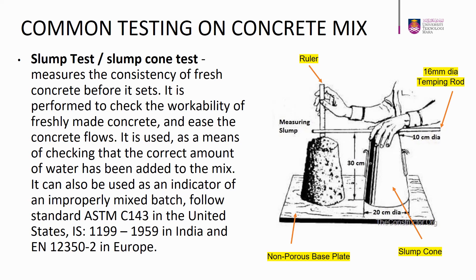There are two common tests on concrete mix. First, the slump test or slump cone test. The slump test measures the consistency of fresh concrete before it sets. It is performed to check the workability of freshly made concrete and the ease with which concrete flows. It is used, indirectly, as a means of checking that the correct amount of water has been added to the mix, and can also be used as an indicator of an improperly mixed batch. The standard codes of practice for slump test are ASTM C143 in the United States, IS 1199-1959 in India, and EN 12350-2 in Europe. The tools and equipment needed include a non-porous base plate, a hollow slump cone with 10 cm diameter on the top and 20 cm diameter on the bottom, a ruler, and a 16 mm diameter tamping rod.